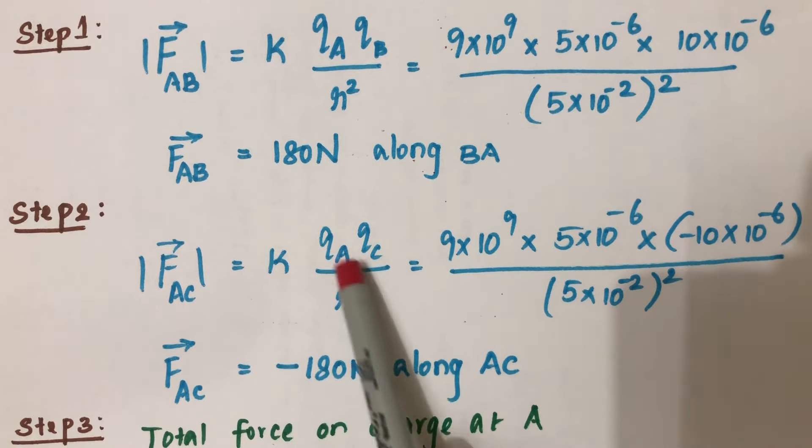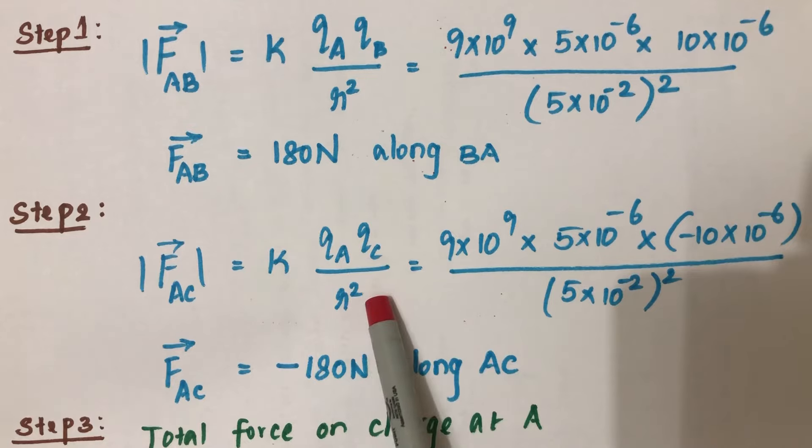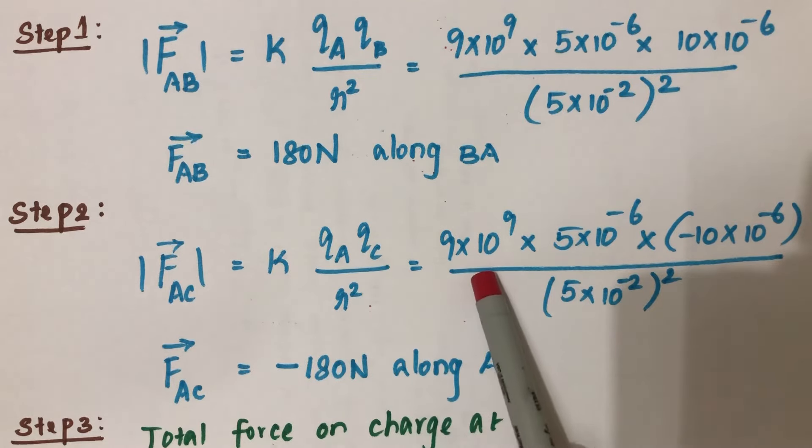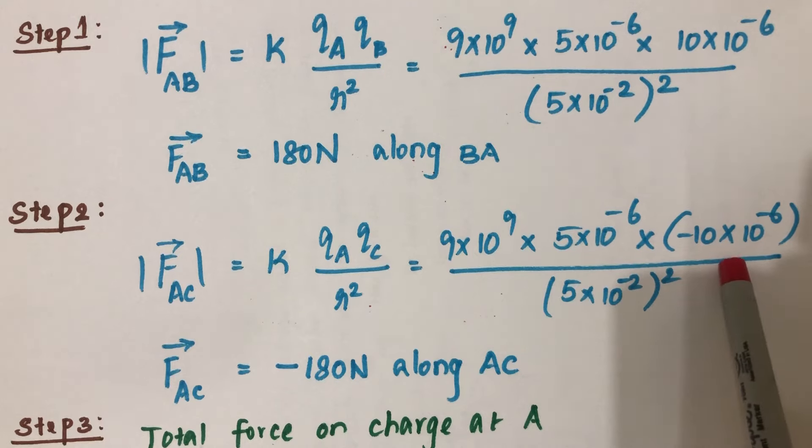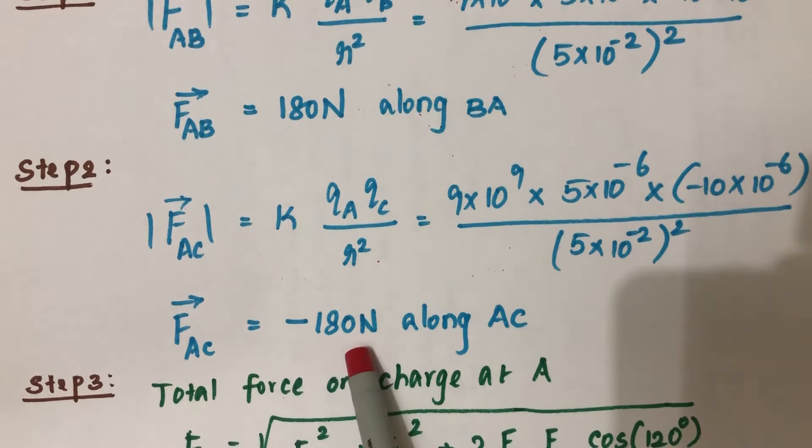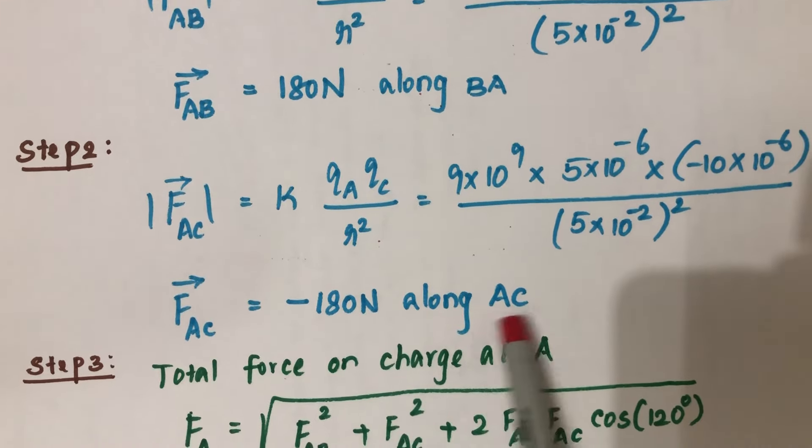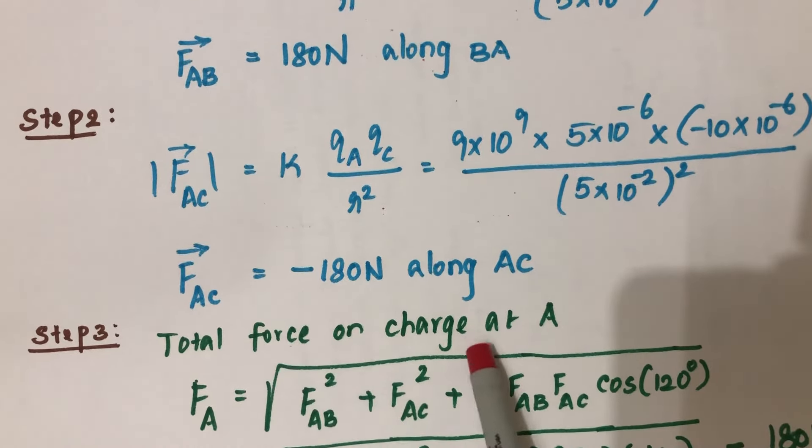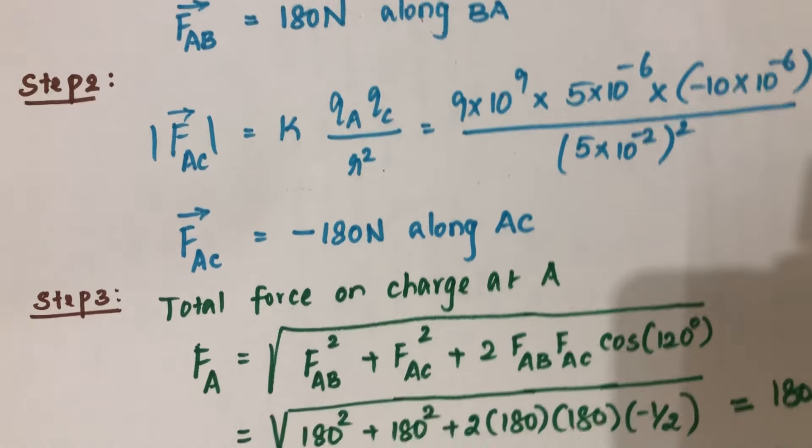FAC, the magnitude of FAC, equals k*QA*QC divided by R squared. The k value is 9×10^9, and the values of QA and QC are substituted here. You'll get a negative sign because it's an attractive force: negative 180 Newtons along AC.